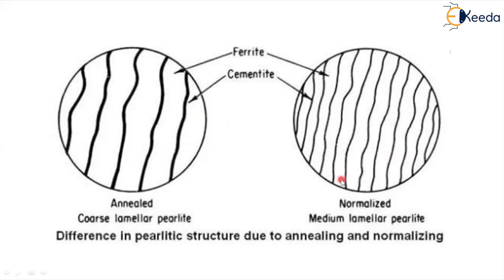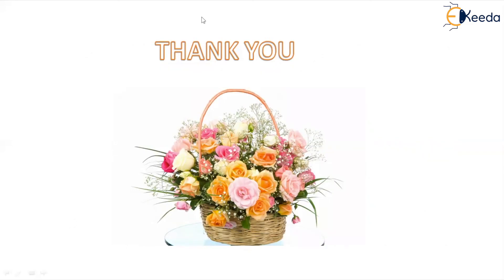The main advantage of normalizing is that ductility increases and machinability also increases due to the fine grained microstructure. This is all about the normalizing heat treatment process, and these salient features will help you understand normalizing heat treatment. I hope you have understood — thank you.